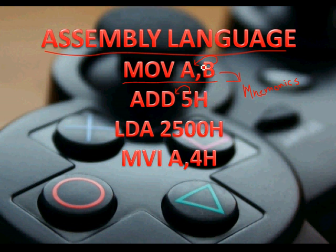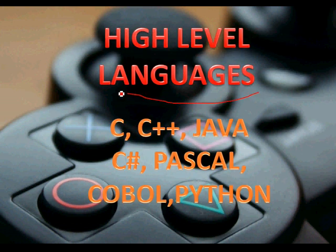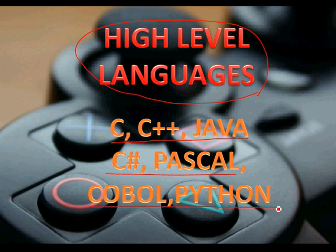Assembly language was pretty fast and amazing, but when programs became more complicated it was pretty hard to use, and it was not possible to continue with it. Then came the solution that just changed the world: high-level programming languages. The most popular ones include C, C++, Java, C#, Pascal, COBOL, and Python — all of these are high-level languages.